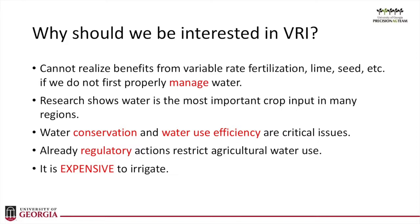In many parts of the country we are having issues with water availability, so conservation and water use efficiency are becoming critical. In some parts of the country, states are now limiting how much water producers can use to irrigate — typically around the Ogallala Aquifer and perhaps California as well. VRI offers solutions to these problems. It's also expensive to irrigate; in Georgia, we estimate it costs between $6 and $10 per acre-inch of water. If you can save one irrigation on a 300-acre pivot, that adds up to real money.